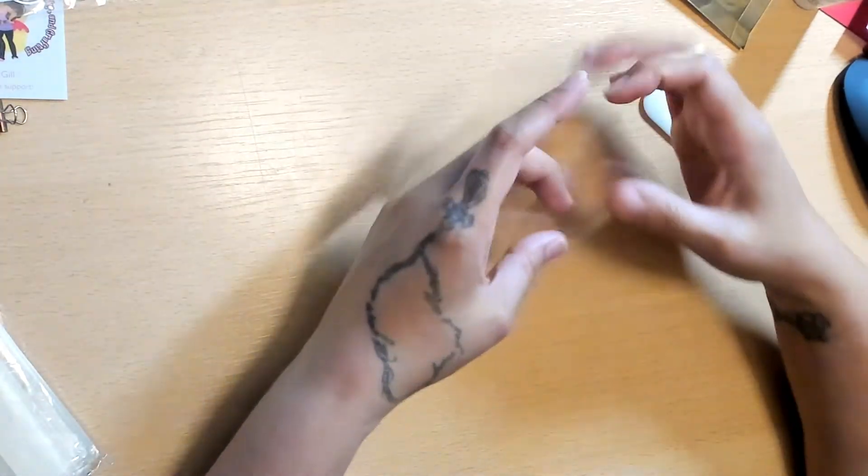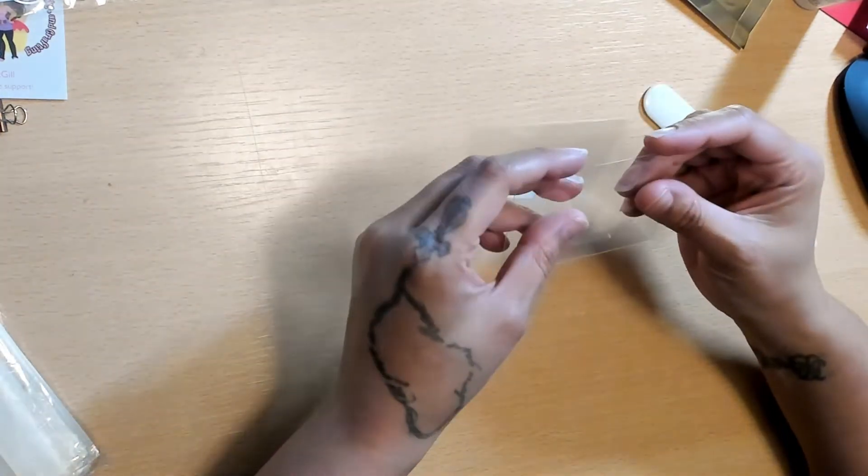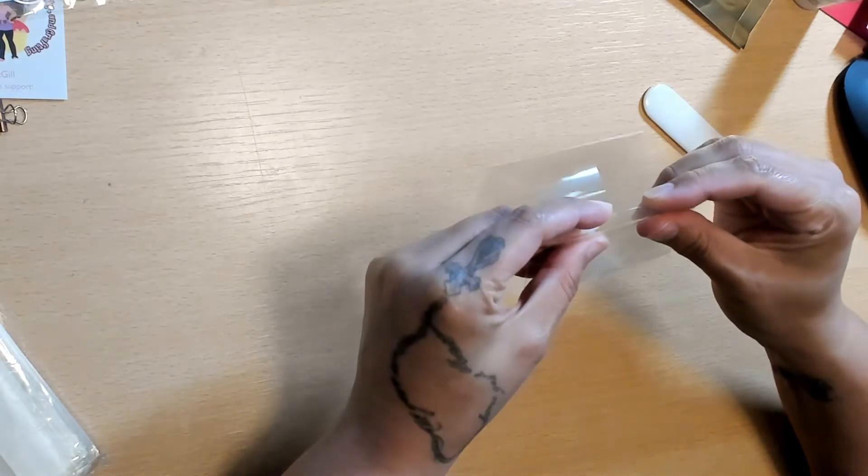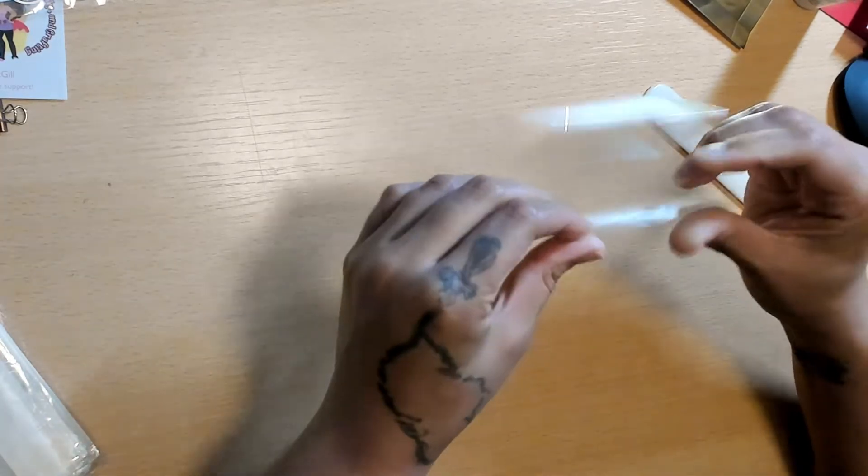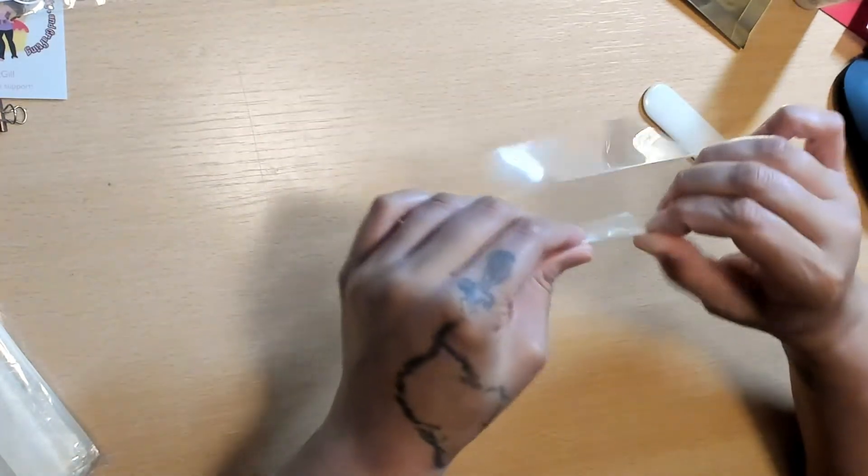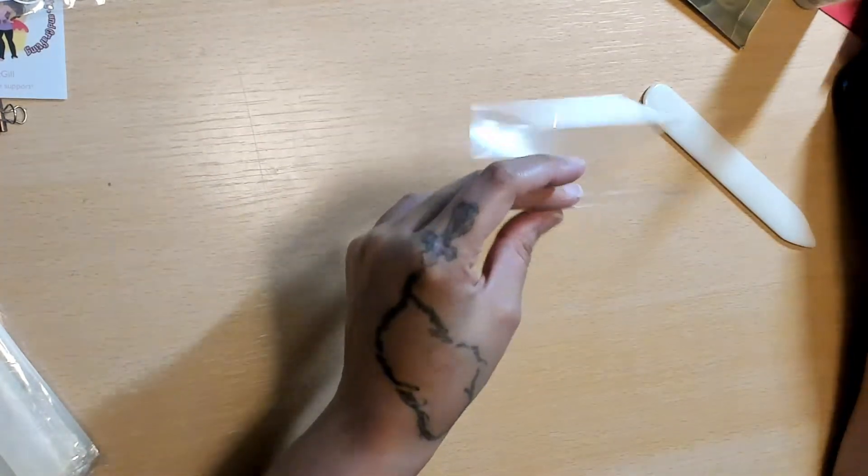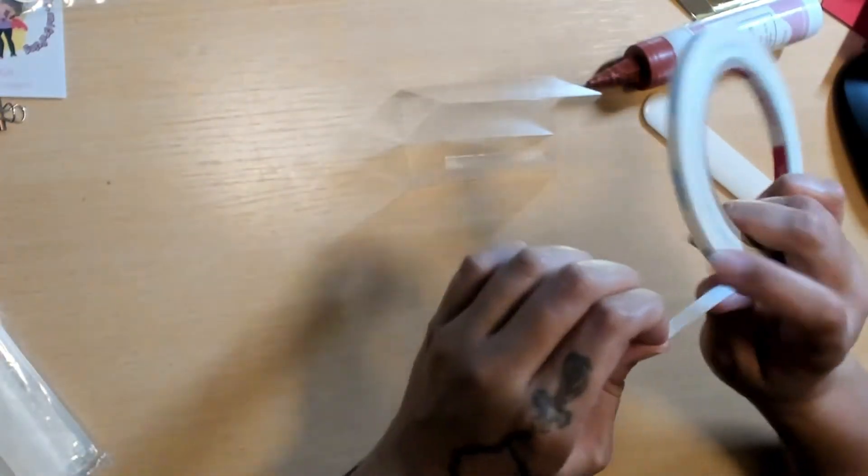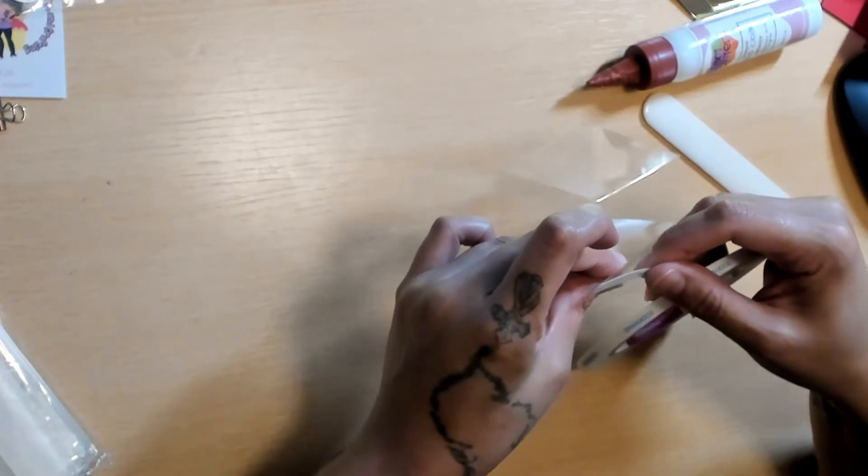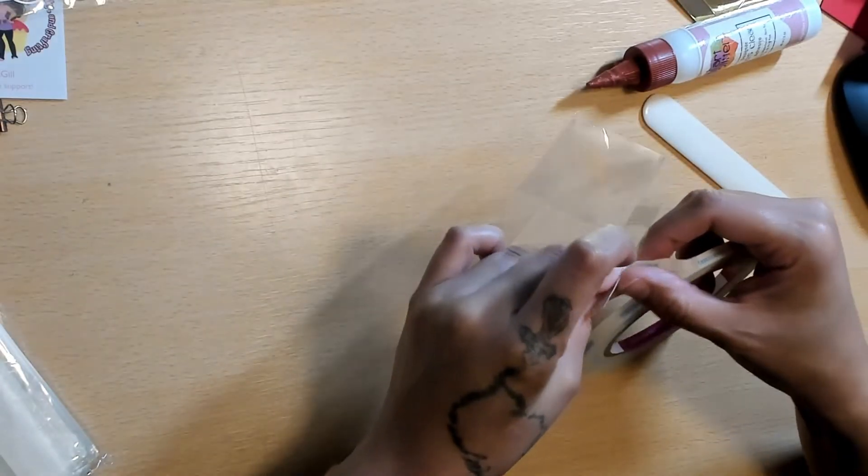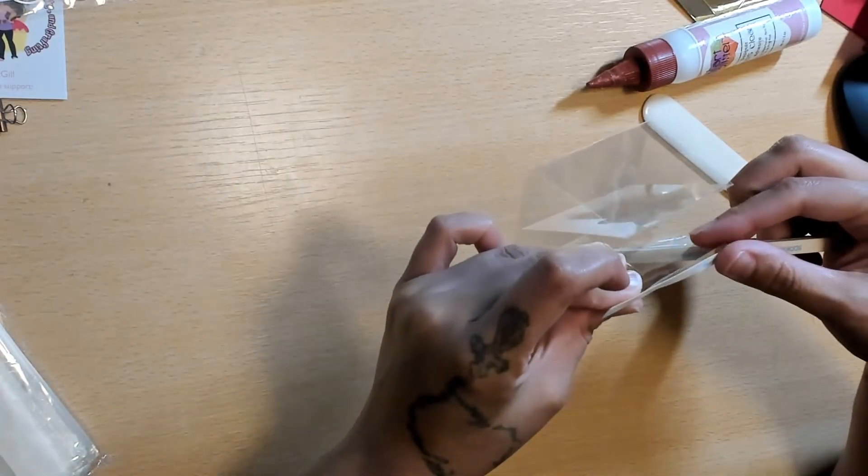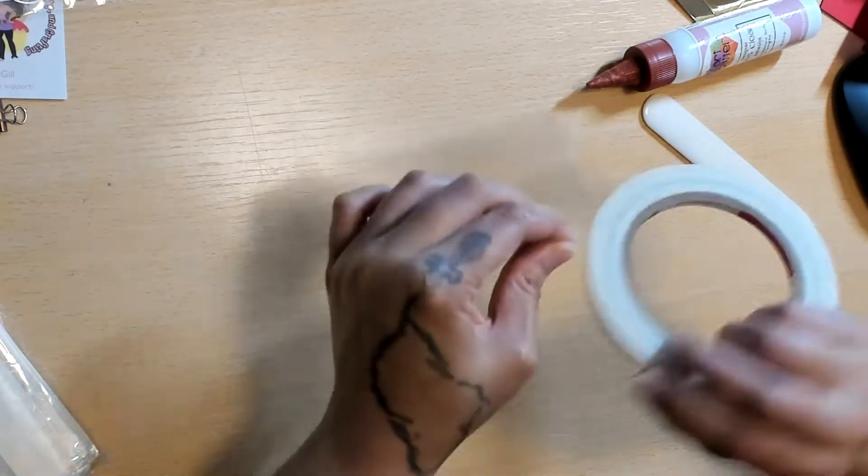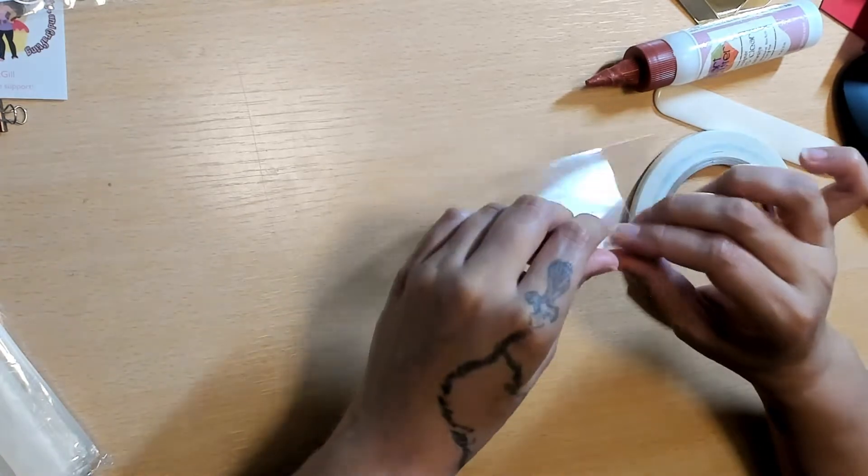Okay, and then the teeny tiny quarter inch one we need to go ahead and get that burnished as well. All right, and that's why we need to put our quarter inch score tape. Obviously I wouldn't use wet glue on this because we're working with acetate. So go ahead and get that tape on your little quarter of an inch.